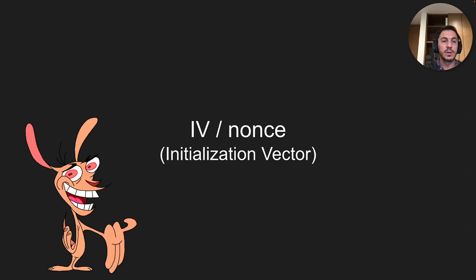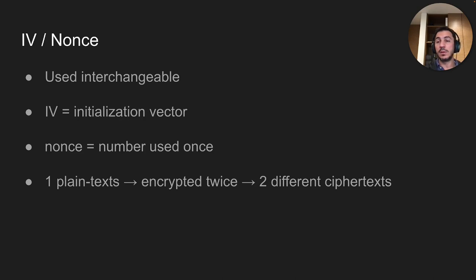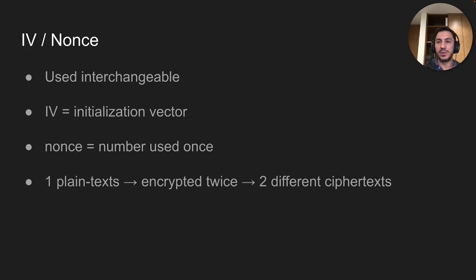Let's briefly introduce what an IV — initialization vector or nonce — is. The literature uses these interchangeably in this use case. What it's usually used for: when you encrypt the same plaintext twice using the same key without it, you may get the same ciphertext. The idea is to add some randomness or uniqueness so that encrypting the same plaintext with the same key twice gives you two different ciphertexts.